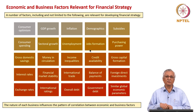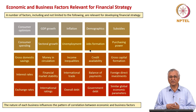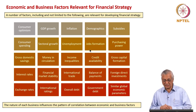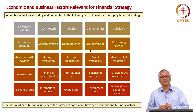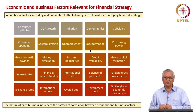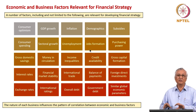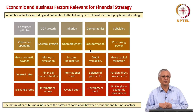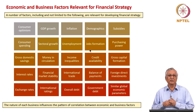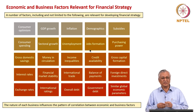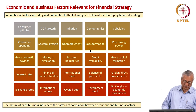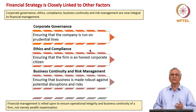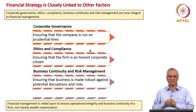Demographics — how young or aged the population is — the level of job formation in the economy, availability of credit, balance of payments, governmental debt, subsidies, purchasing power, gross capital formation, and foreign direct investment are also important. Similarly, what we analyze at the national level we should be able to analyze at the global level. The financial strategy when we talk about environmental factors has a set of very economically driven numbers that are very relevant for formulating the financial strategy of the company. Financial strategy is far more than just forming a set of numbers.